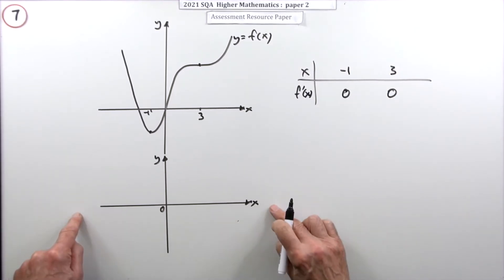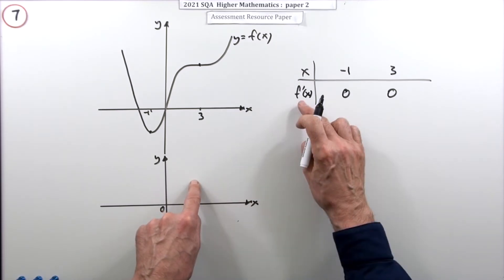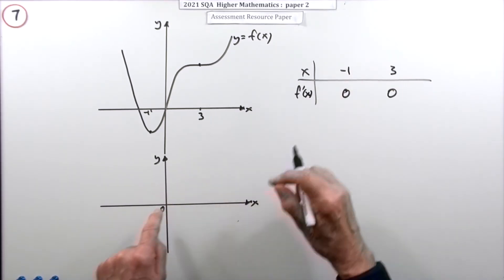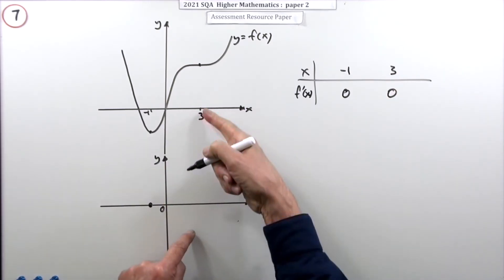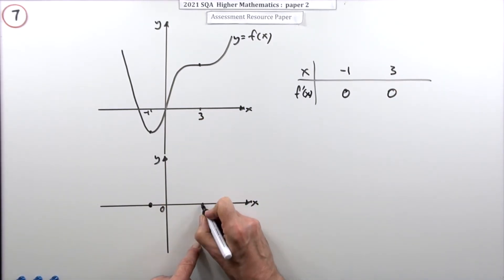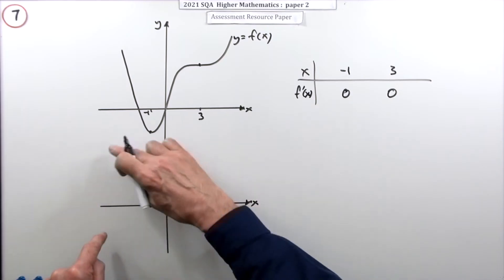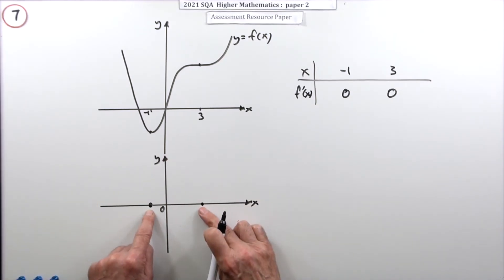So that means in this graph, since I'm plotting f dashed x, at x equals negative one and at x equals three, this graph will pass through those points. Those are the zeros of this graph. That's where it cuts the x axis. So I'll put them in negative one and three. I think those really are two of the marks that are going to appear. I don't know if I can put them in just now because I'll have to sketch the graph. But what happens in between?